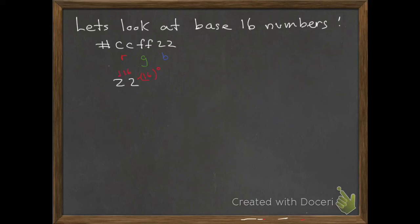We do the same thing with the 22. 2 times 16 to the 1 plus 2 times 16 to the 0, and we calculate that out. That equals 34. We found that CCFF22 equals RGB 204, 255 and 34.